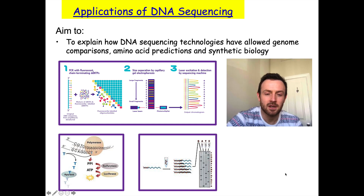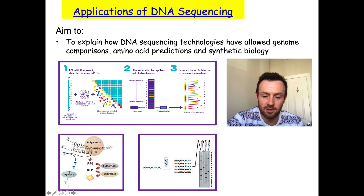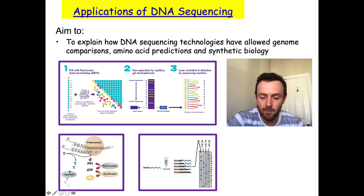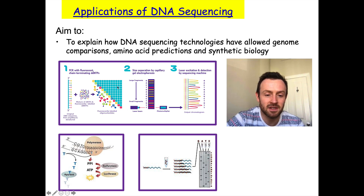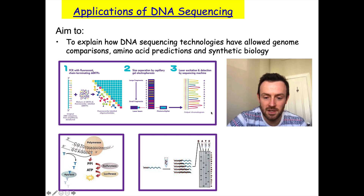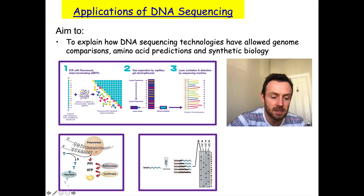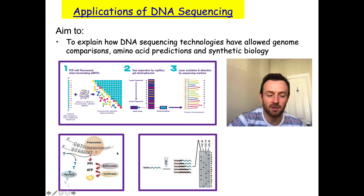The oldest method was the original Sanger sequencing method, which uses gel electrophoresis to separate DNA fragments by size. Then comes automated dideoxy sequencing, which gives a fluorescent chromatogram output. The newest method is pyrosequencing, which involves flashes of light as nucleotides are added to the chain.